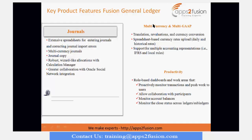You can have translations and re-evaluations. Translations means reporting currencies — you can translate balances into different currencies from your ledger currency or functional currency. Re-evaluations can also be defined in the system. We will also cover currency conversions and spreadsheet-based currency rate upload, which we saw last time. There is also support for multiple accounting representations for IFRS and local rules, all within subledger accounting.